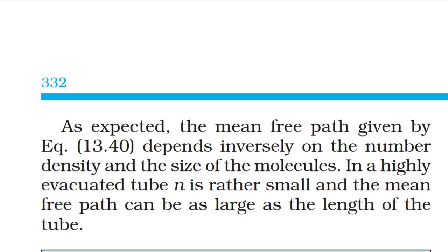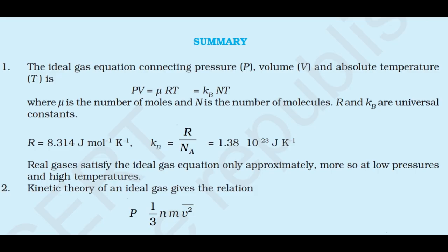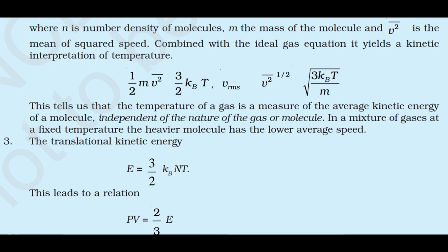Summary: 1) The ideal gas equation is PV = μRT = kB·N·T, where μ is the number of moles and N is the number of molecules; R and kB are universal constants. Real gases satisfy the ideal gas equation only approximately, more so at low pressures and high temperatures. 2) Kinetic theory gives P = (1/3)·n·m·v̄², where n is the number density, m is the mass of the molecule, and v̄² is the mean squared speed. Combined with the ideal gas equation this yields ½m·v̄² = (3/2)kBT.